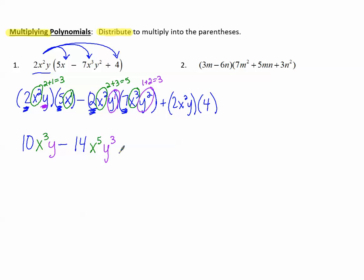And finally, plus 2 times 4 makes 8. And then, we have x² and no other x's to multiply. And the y with no other y's to multiply. So there's our final answer, 10x³y - 14x⁵y³ + 8x²y.